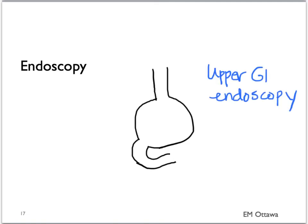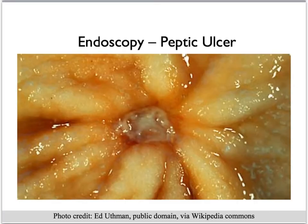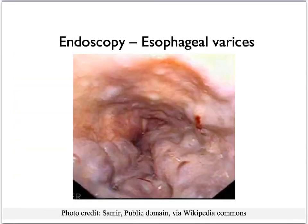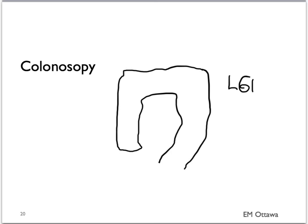The main tests we do on patients with GI bleed will be endoscopy, performed by trained gastroenterologists. In upper GI endoscopy we will be able to see what's bleeding in the stomach, the esophagus, and the first part of the duodenum. On endoscopy, this is what a peptic ulcer might look like — you can appreciate how if it's bleeding actively it might be very hard to see the base. On endoscopy, these are what esophageal varices will look like — these bulging blood vessels right at the GE junction. Colonoscopy is used to diagnose lower GI bleeds.